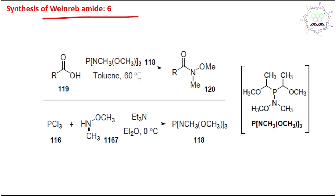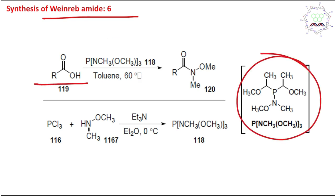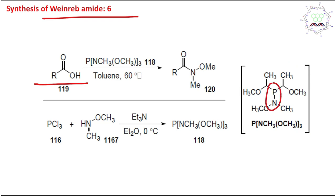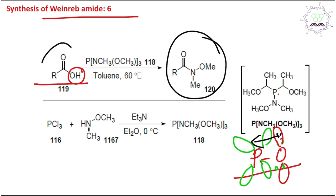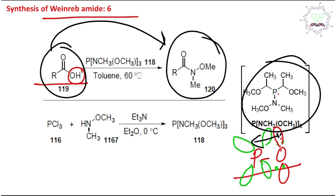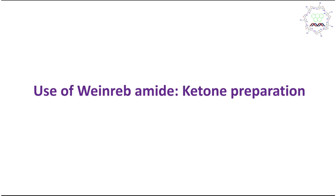The next example shows synthesis of Weinreb amide from carboxylic acid using a phosphorus reagent containing a P-N bond. The oxygen transfers to phosphorus because of the very stable phosphorus-oxygen bond via dπ-pπ back bonding: the filled p orbital of oxygen delocalizes electron density into the vacant d orbital of phosphorus, giving the P=O bond multiple-bond character. In this way, carboxylic acid is directly converted to the Weinreb amide. The reagent itself is prepared from a P-Cl bond with the amide derivative using triethylamine as base.